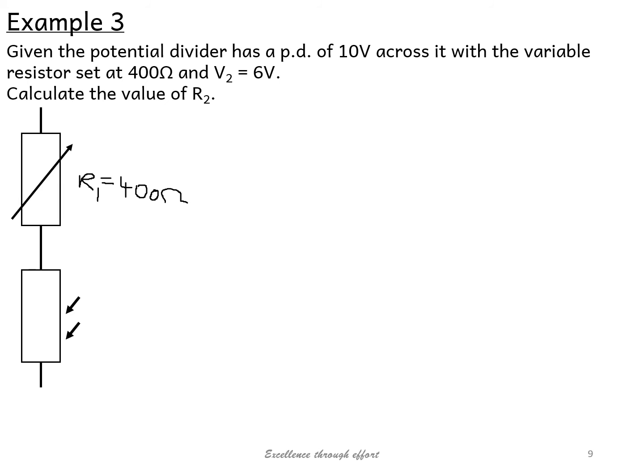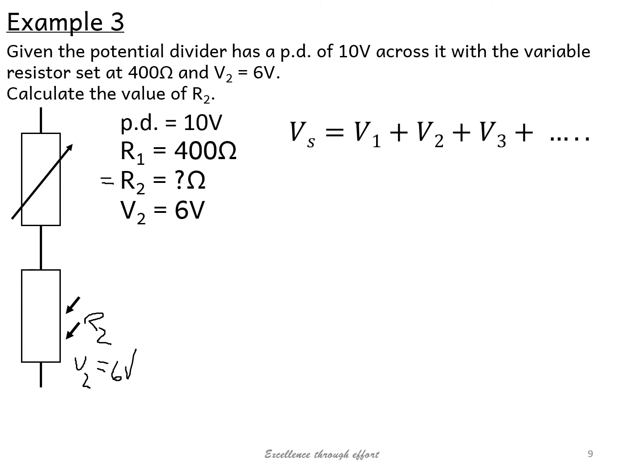And we know that this one here is the one that we're trying to find. Now we're given that V2 is 6 volts, and that's all the information we're given. Our KFC technique, you will see: pd is 10 volts, R1 is 400, R2 is unknown, and V2 is 6 volts. Now the first thing we want to do is work out the other voltage, so remember we're using our series circuit rules for voltages, and we get that V1 is 4 volts.